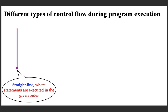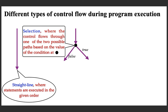Another way of control flow is where the control is initially straight line, coming to a decision point from where you have to take a decision. There will be a condition to be evaluated. If the condition is true the control flows to the right branch of the program, or it flows to the left branch. This is called selection, where the control flows through one of two possible paths based on the value of the condition.